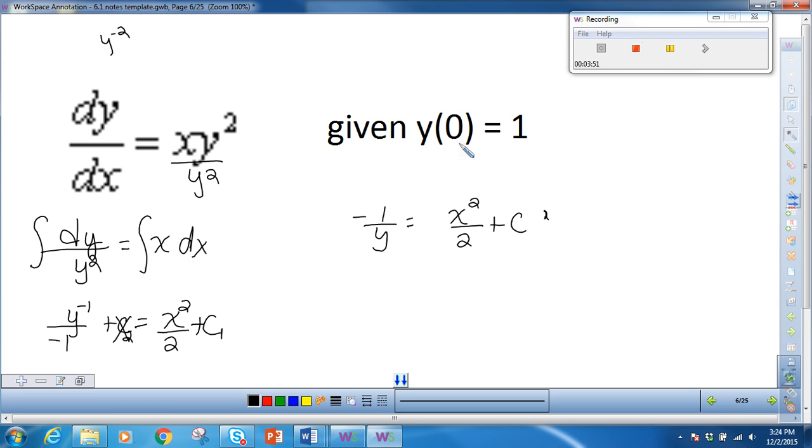Now, we're doing a particular solution. So we're going to use our initial value. This is x and this is y. So I can say negative 1 over 1 is equal to, x is 0, so 0 over 2 plus c, which gives me that c is equal to negative 1.